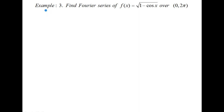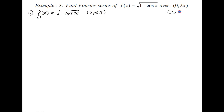Hello Friend. Welcome. In this video we will solve one more example based on continuous function over 0 to 2π. Here our function is given as f(x) = √(1 - cos x) over 0 to 2π. If we compare this limit with c to c+2l, then the value for c is 0, and comparing 2l with 2π we get l = π.